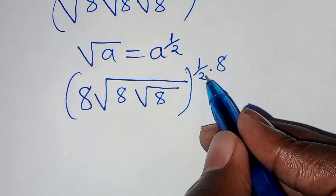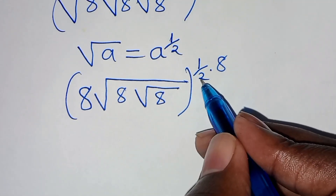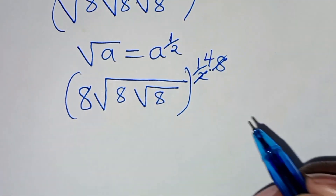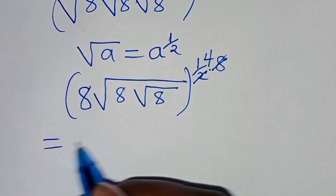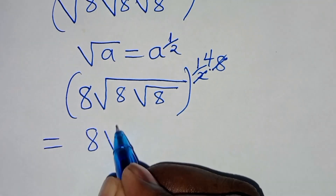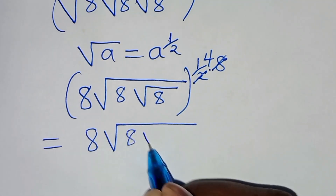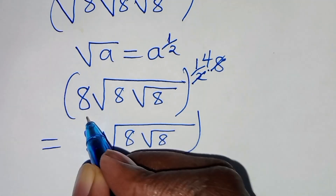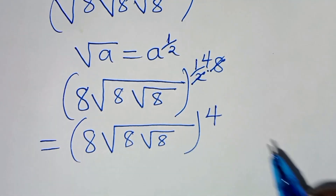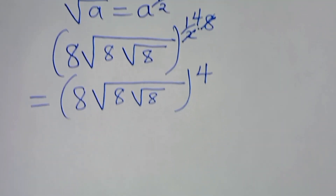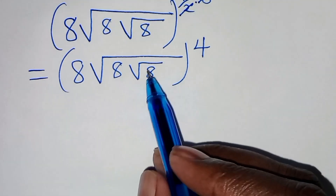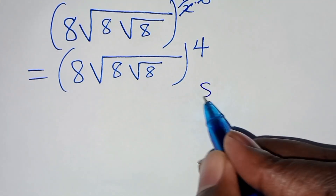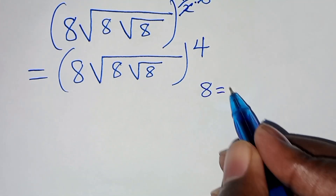This implies we can simplify: 8 divided by 2 gives us 4. So this implies we have 8 times square root of 8 multiplied by square root of 8, everything raised to power 4. Now the next step is we can express 8 as 2 to the power 3.